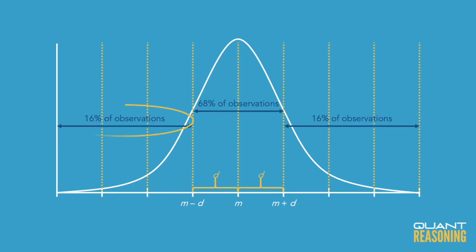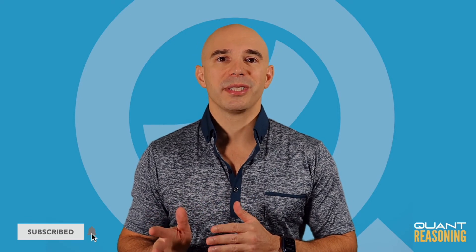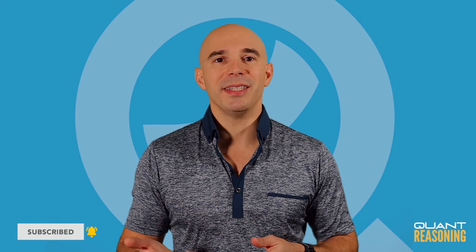The question wants to know what percent overall lie below m plus d. There's going to be the 16% that's below m minus d and another 68% within one standard deviation from the mean, for a total of 84%. A quicker way to do that is to say it's going to be everybody excluding the top 16%, so 100 minus 16 is 84. Either way you do it, the correct answer is D.